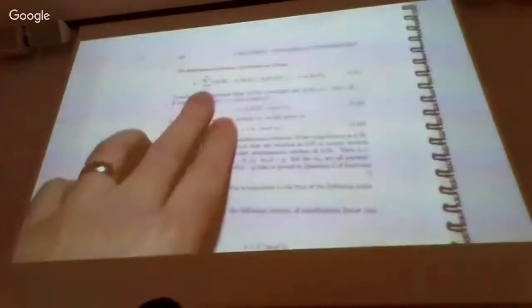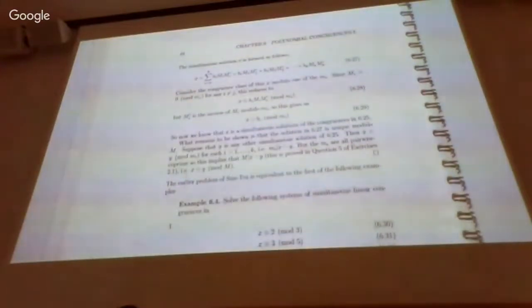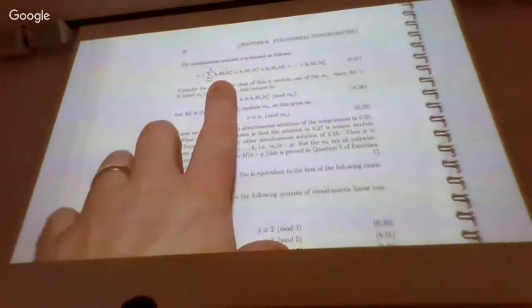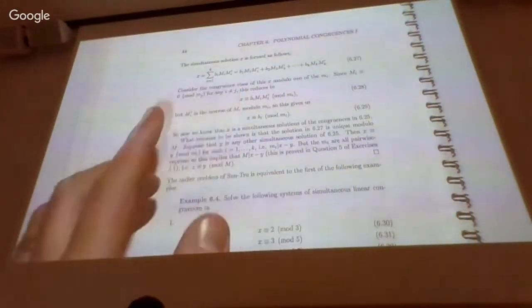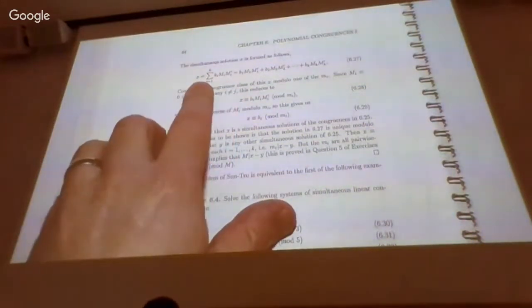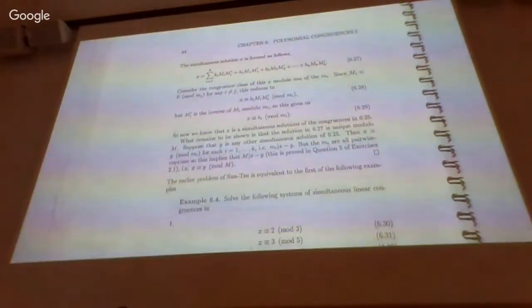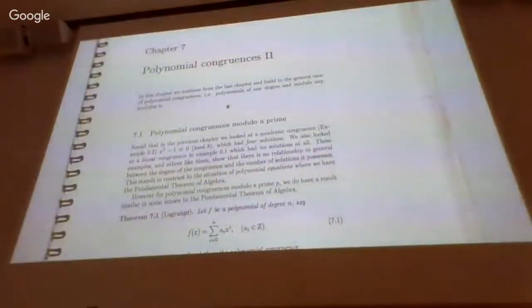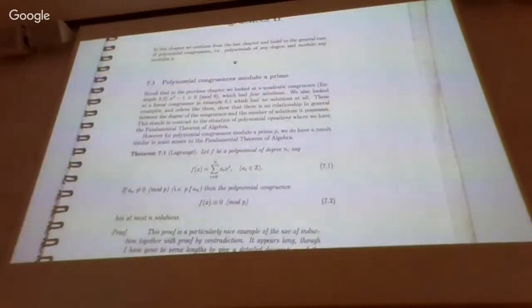It all boils down to the way the simultaneous solution x is constructed — the number that simultaneously satisfies each of the sub-congruences. Coming on to Chapter 7, Chapter 7 steps up from the case of linear congruences and we come to talk about general congruences — polynomials of any degree, and ultimately polynomials modulo any modulus.